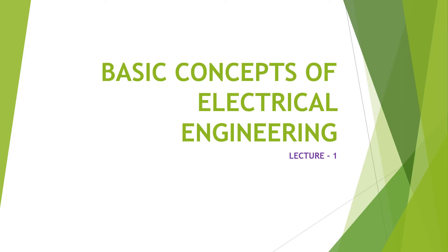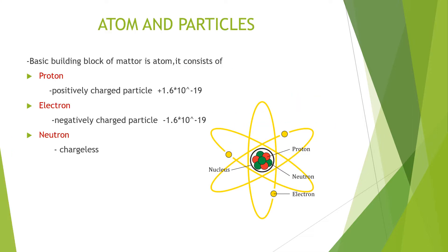Welcome to my channel. This is the first lecture for basic concepts of electrical engineering. First, we can think about the atom and its particles. An atom is nothing but the building block of matter, and it consists of mainly three things: proton, electron, and neutron.